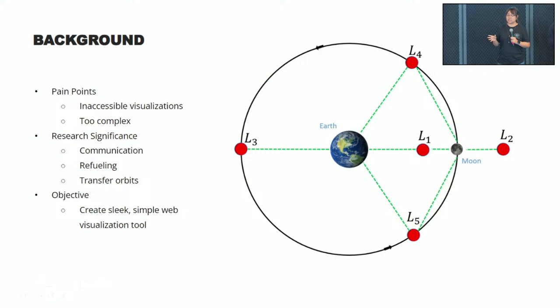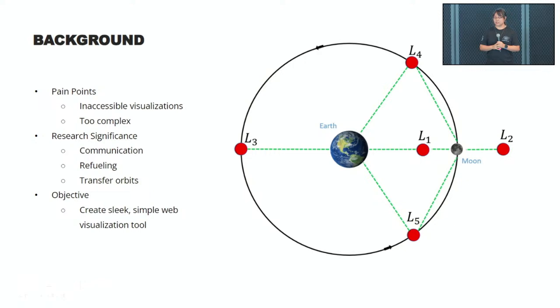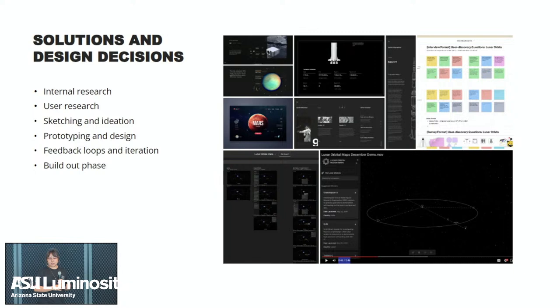Pretty early on in the design process, we discovered pain points about existing tools for cislunar space visualizations — they're usually inaccessible and way too complicated for the layman to understand. This area of research is important because it helps navigate communication in space, figuring out details about refueling, transfer orbits, and other sectors of space activity. Our objective was to create a sleek, simple web visualization tool that would help people understand what orbital space means.